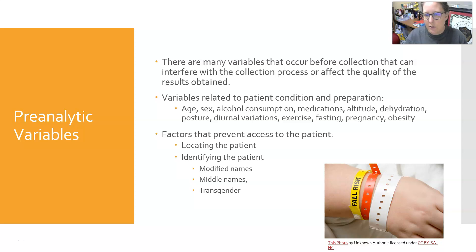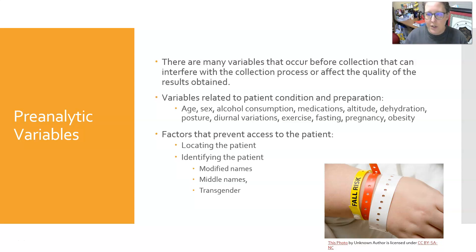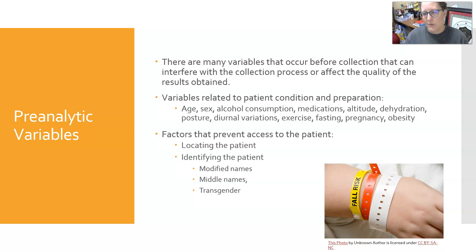These include age, sex, alcohol consumption, medications the patients are on, altitude at which the blood is drawn or at which you live, dehydration, their posture — whether they're sitting down or laying down, and if they're laying down, can they even sit up — diurnal variations, exercise, fasting, pregnancy, obesity — all of those things.